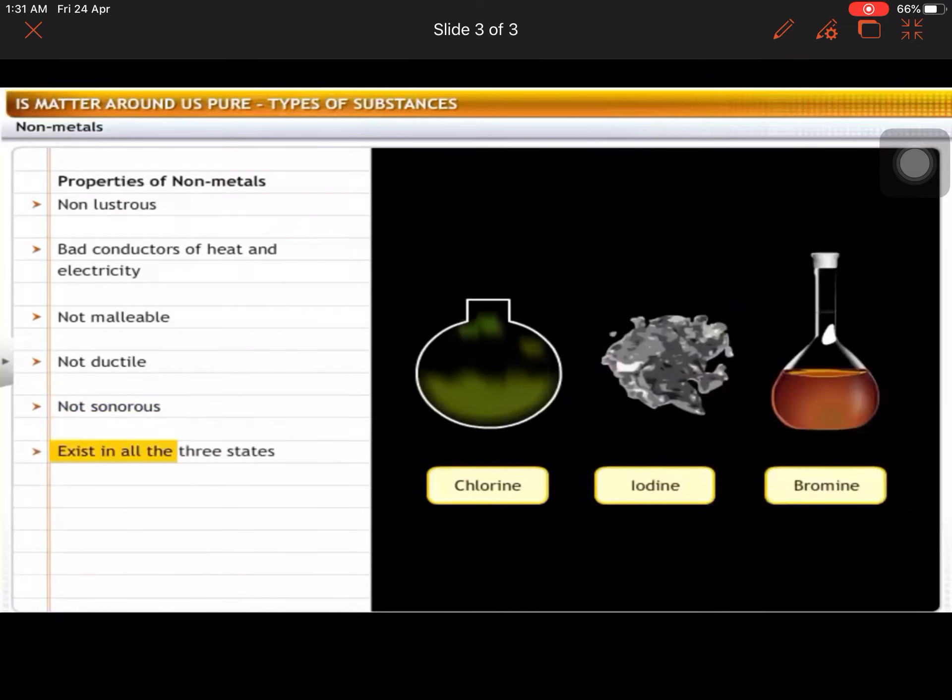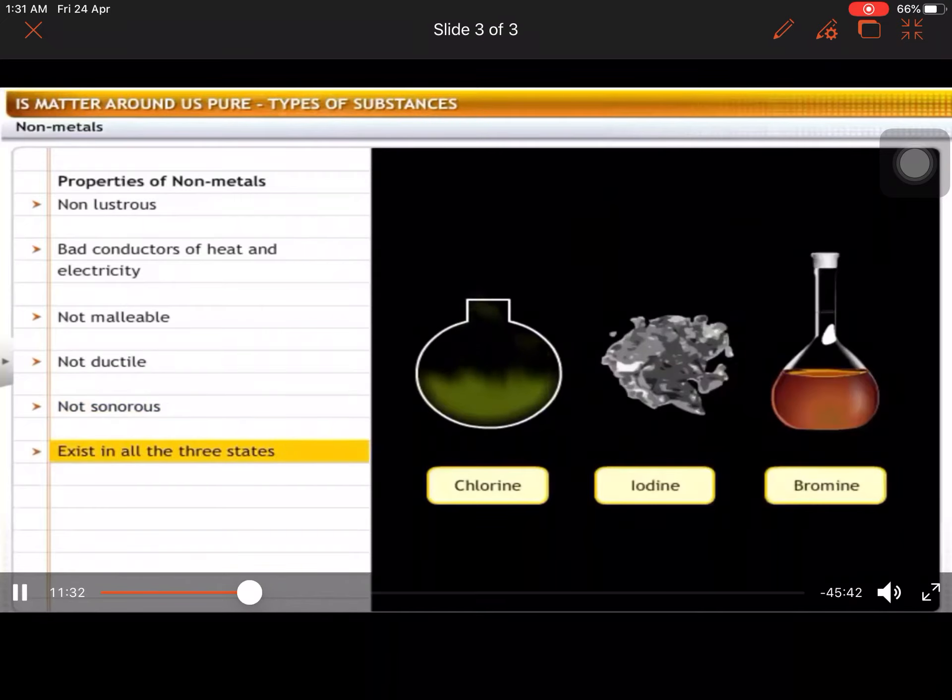Non-metals exist in all three states. Very interesting point - non-metals can be in three states. How? You said that metals are solid - all metals are solid, right? But non-metals can be different. You can see that bromine is liquid. Iodine is in solid form, of course. Chlorine is in gas form. Correct? Non-metals have three forms, but metals can only have one form. Okay?